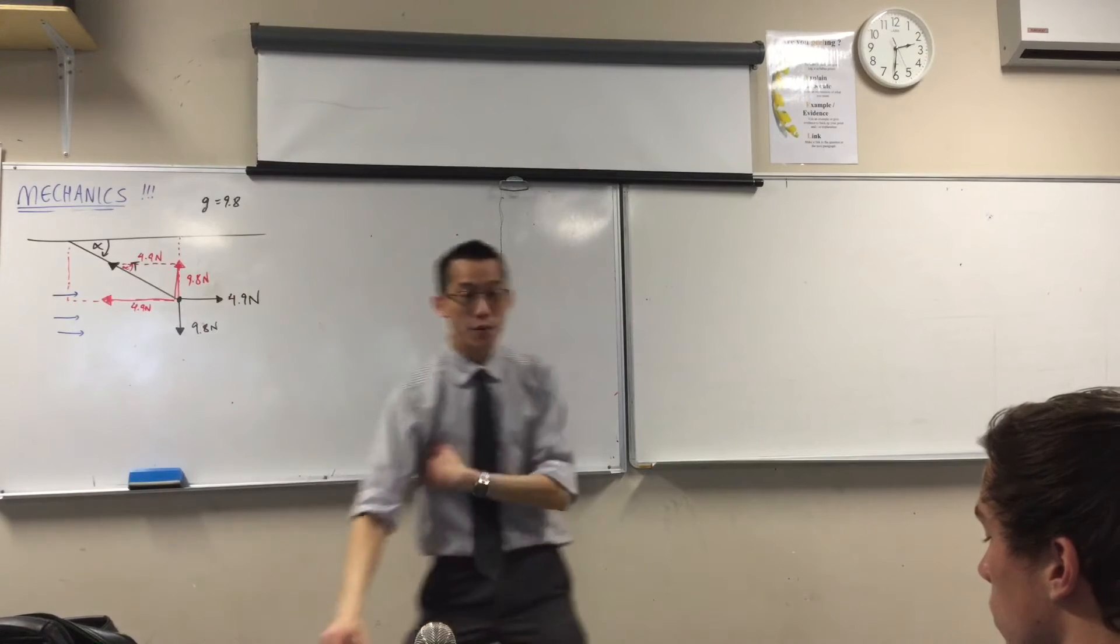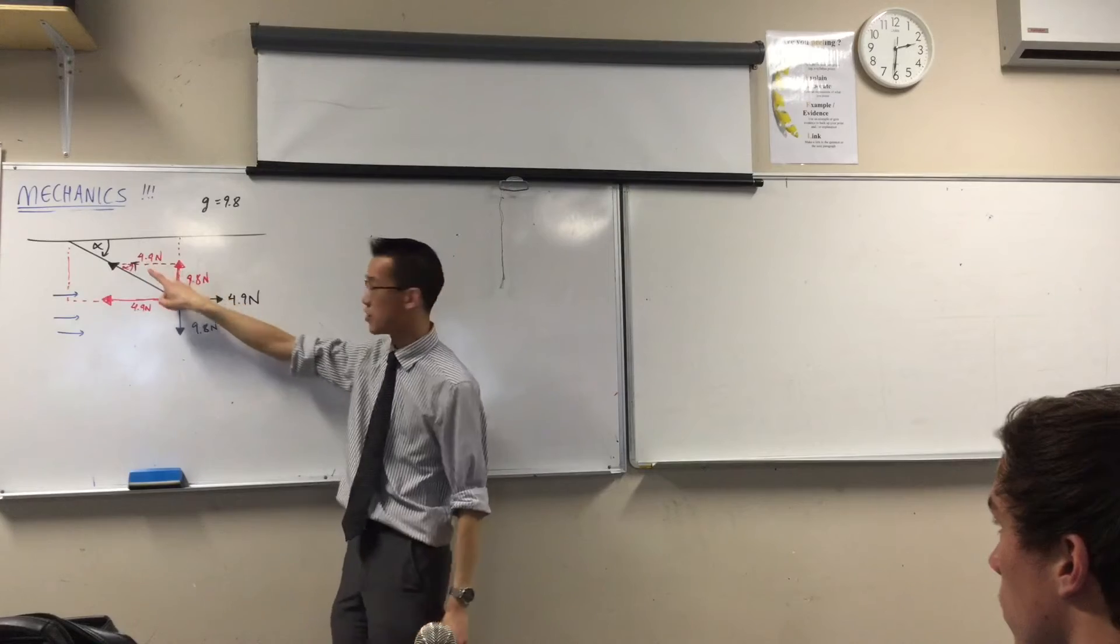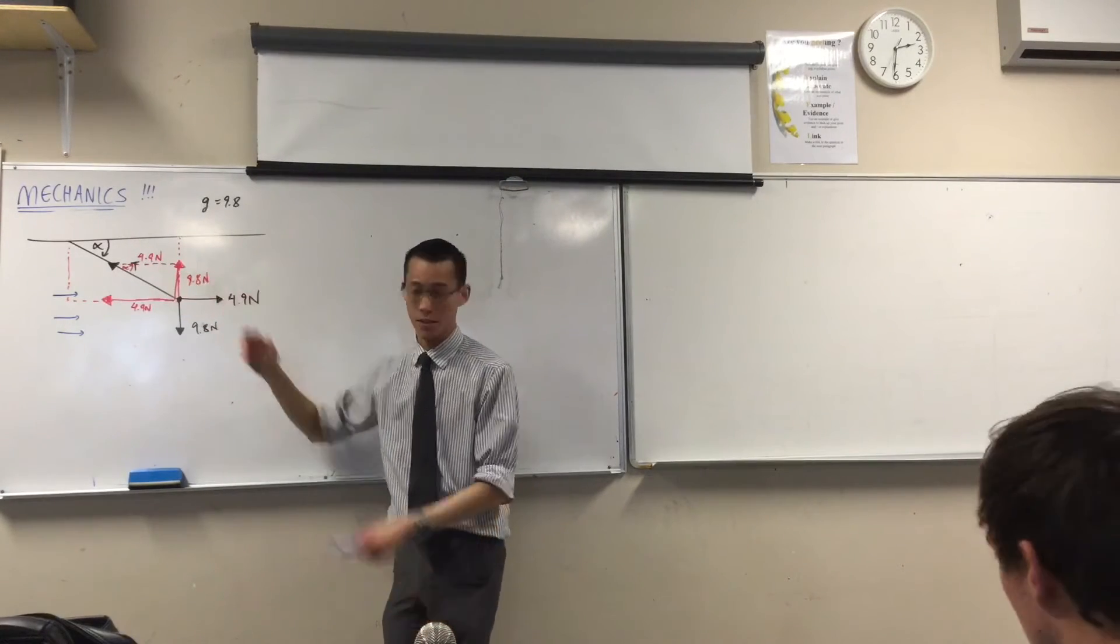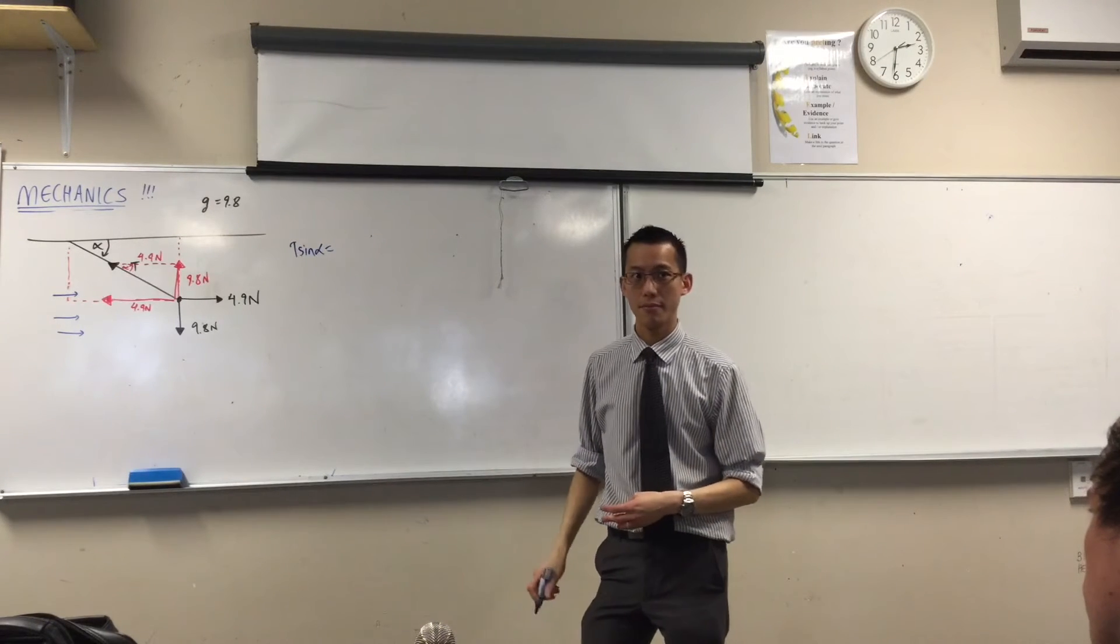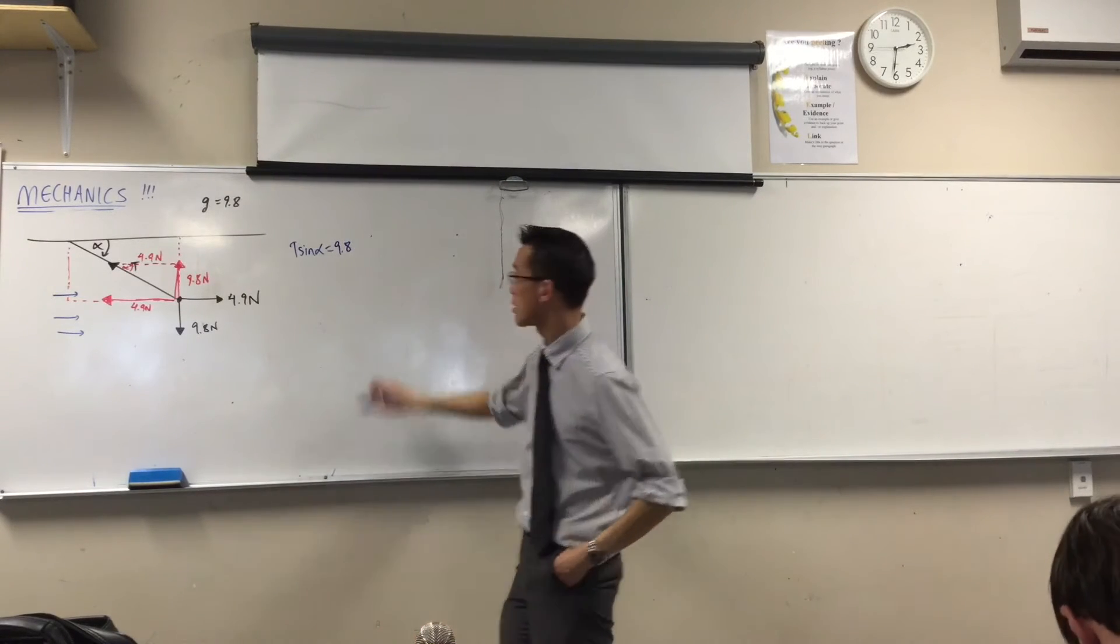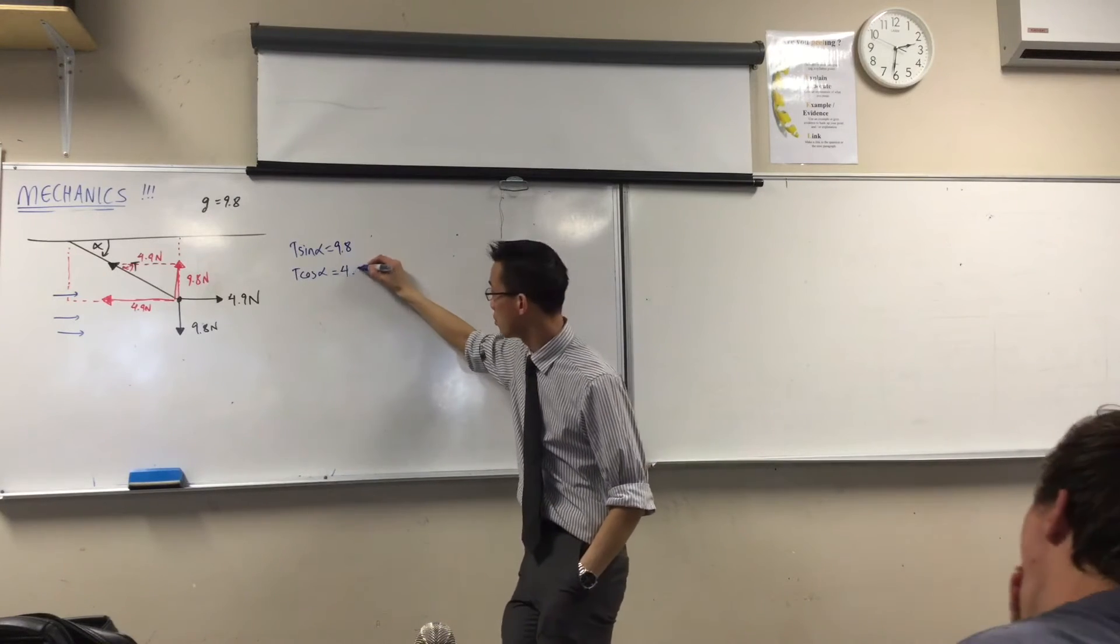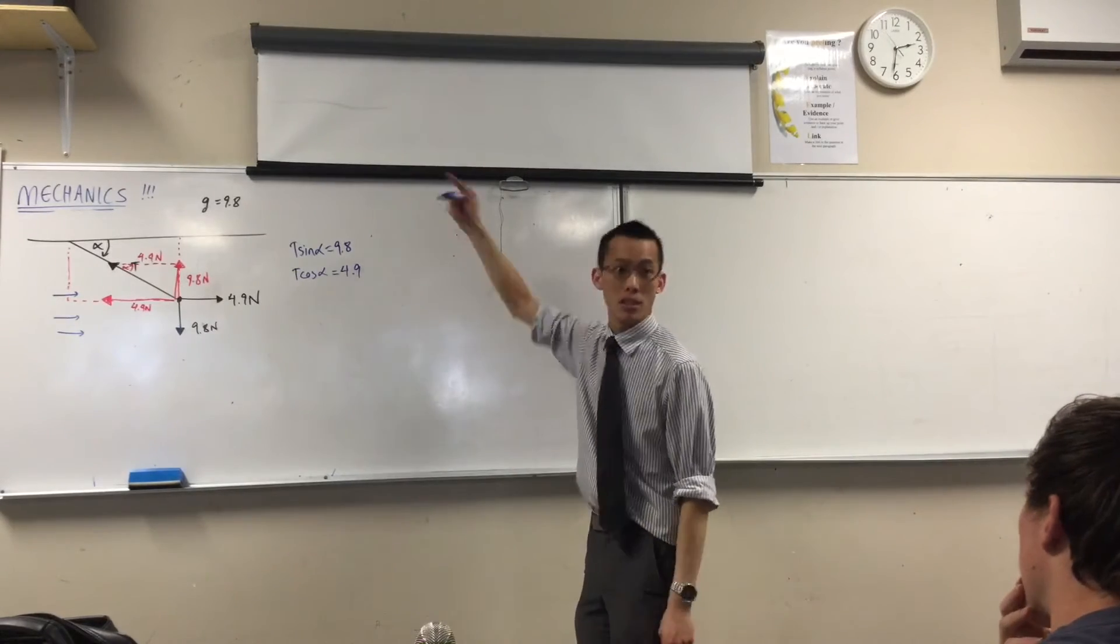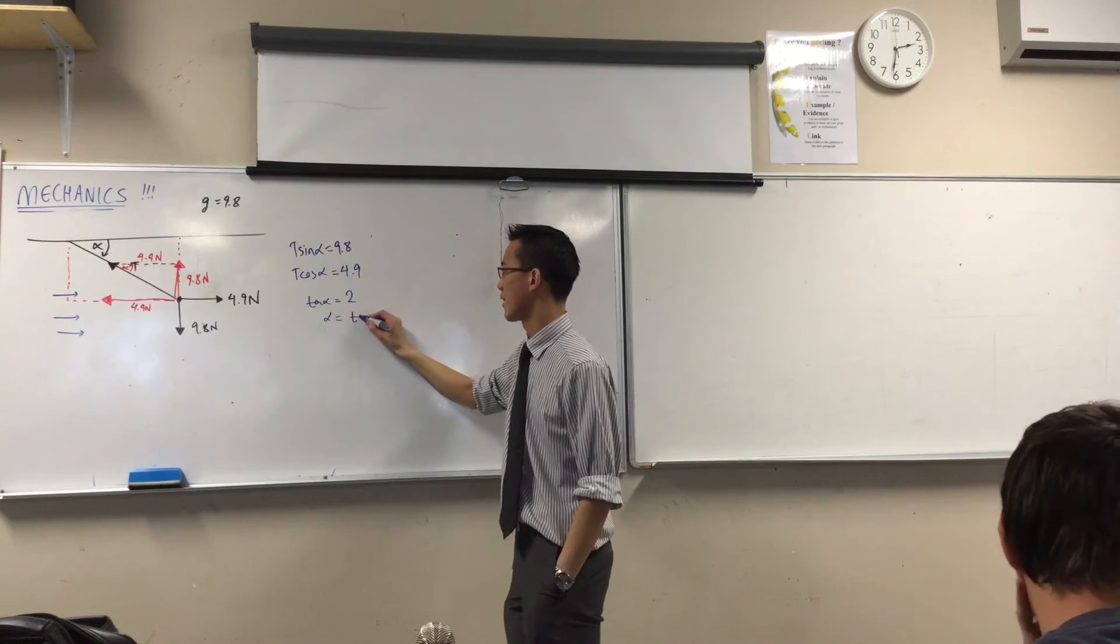So therefore, probably what I would formally write is I'm going to write a pair of equations that relate T and alpha to these two vectors. So I'm going to say T sine alpha, that's vertical, right? Thank you. 9.8 newtons. In the same way, T cos alpha is going to be 4.9. And so to get tan alpha, that's what they're after, clearly all I need to do is divide 1 by 2. So tan alpha is equal to 2, and that's where they get their angle from.